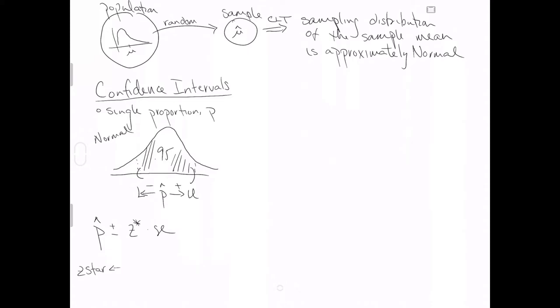In the case of a confidence interval, you know the percentage you're interested in — this 95% is a known quantity. You want to use that known percent to find quantiles, so you'll use a function that starts with the letter q. For a single proportion, since the sampling distribution is approximately normal, we will use q-norm. I'm going to use the numbers appropriate for a 95% confidence interval — if you need to refresh on where those numbers come from, please go see the video appropriate for confidence intervals. This gives us the basic calculation to come up with z-star, and then the rest just falls into place.